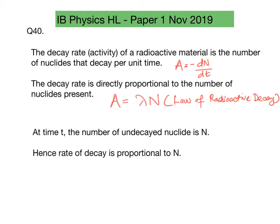Question 40 is on radioactivity. The decay rate or activity for radioactive material is directly proportional to the number of nuclides present, as stated by the law of radioactive decay and given by this equation here.